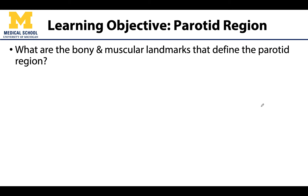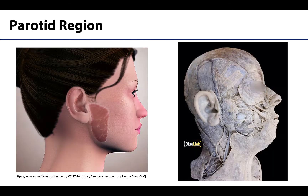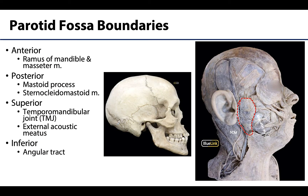So we'll spend the majority of the time discussing the boundaries of the parotid fossa. But let's get our very basic bearings first. The parotid gland is located in the parotid fossa, which is in the parotid region — basically this posterior lateral portion of the face. In the most general terms, it's going to be anterior to the ear, over the ramus of the mandible, but not quite into the cheek region. So you can see that the teeth are right here — that's the most general location of the parotid gland.